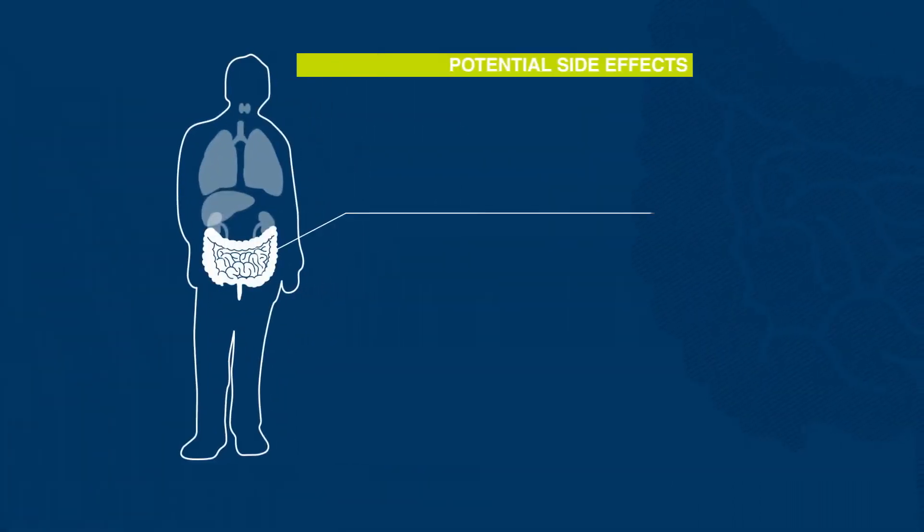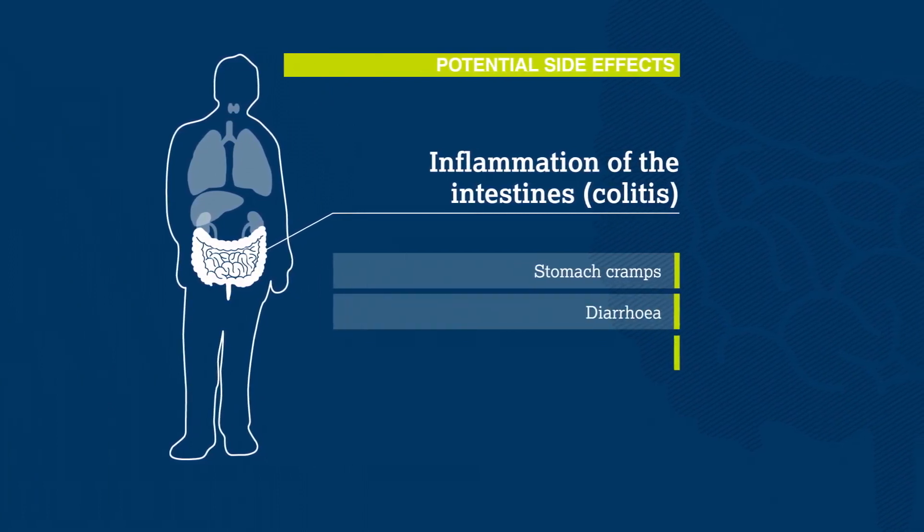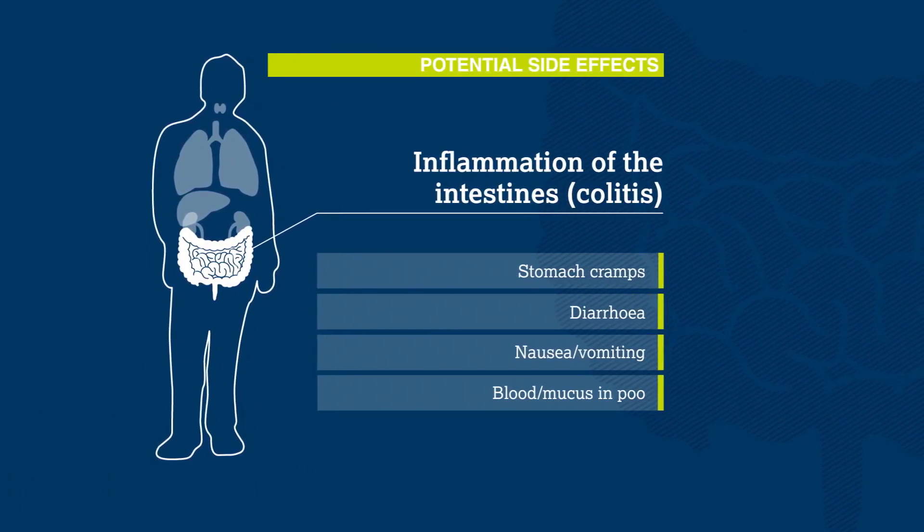Other patients may have intestinal problems, such as stomach cramps, diarrhea, or nausea and vomiting. Some might find blood or mucus in their stool.